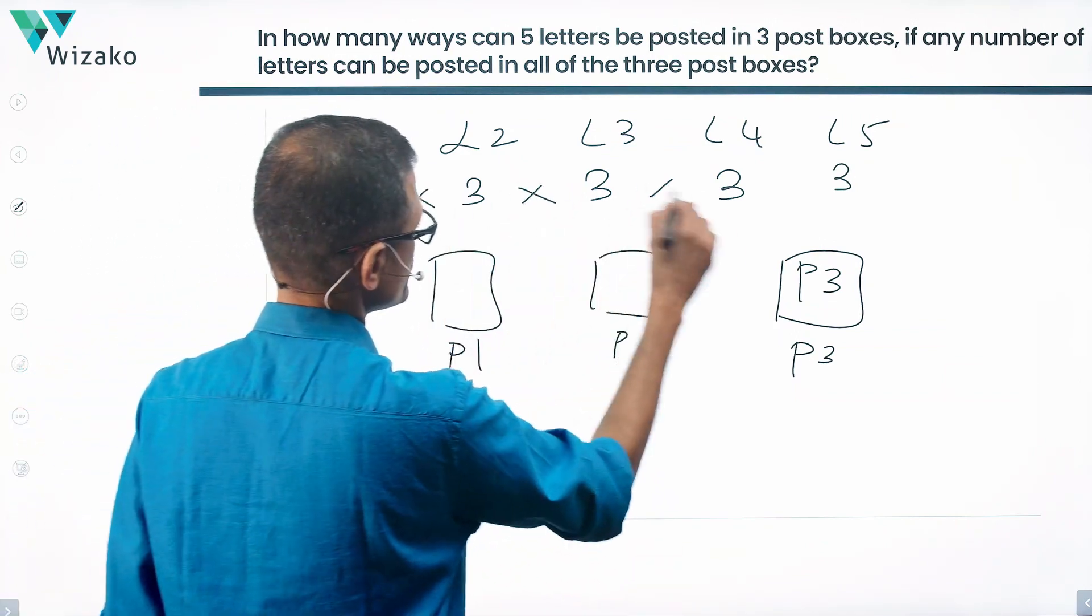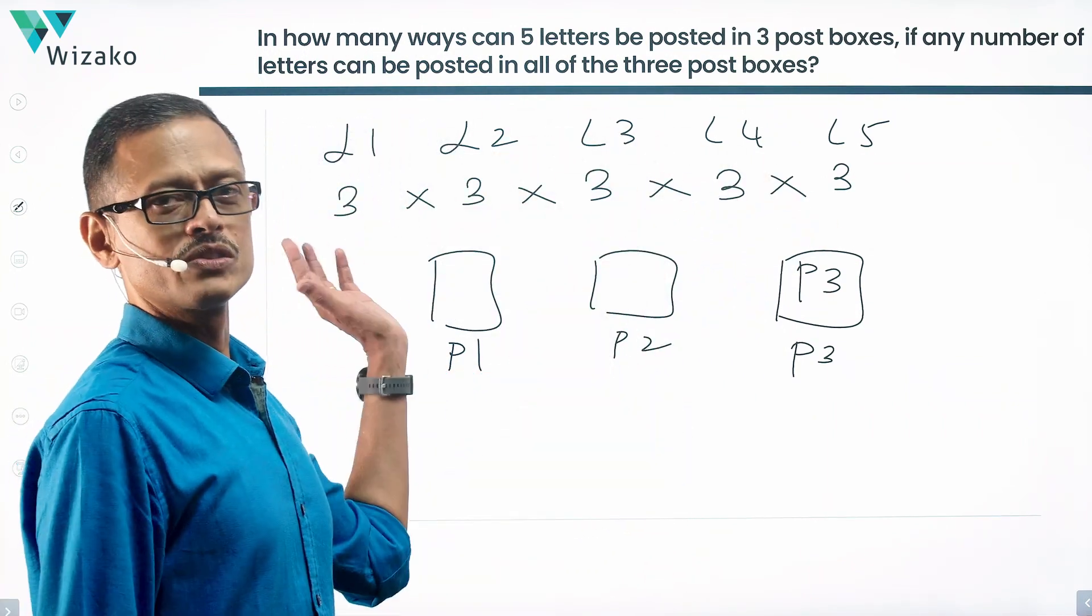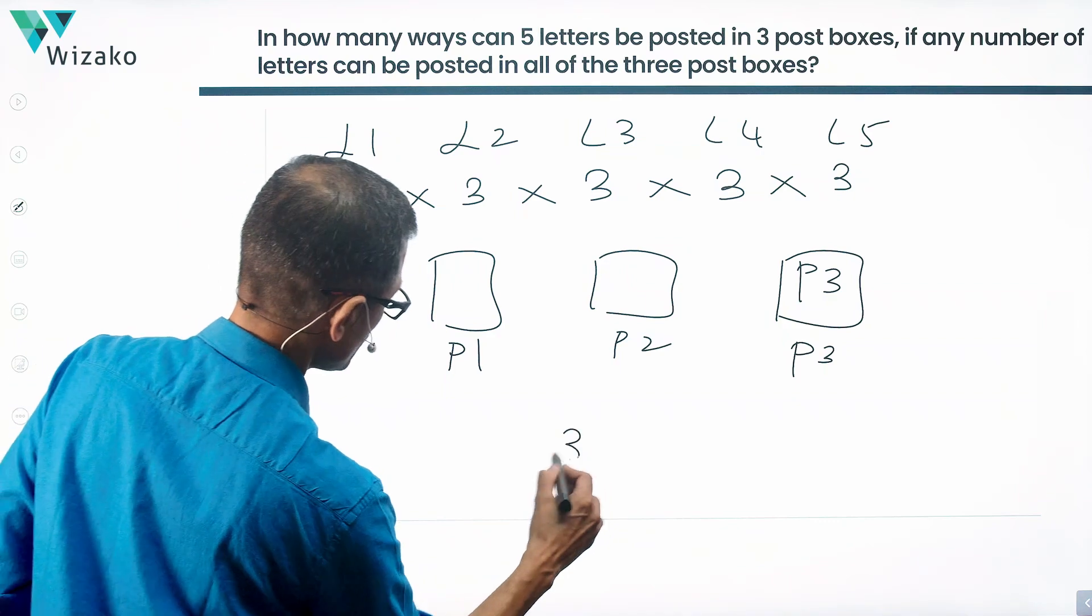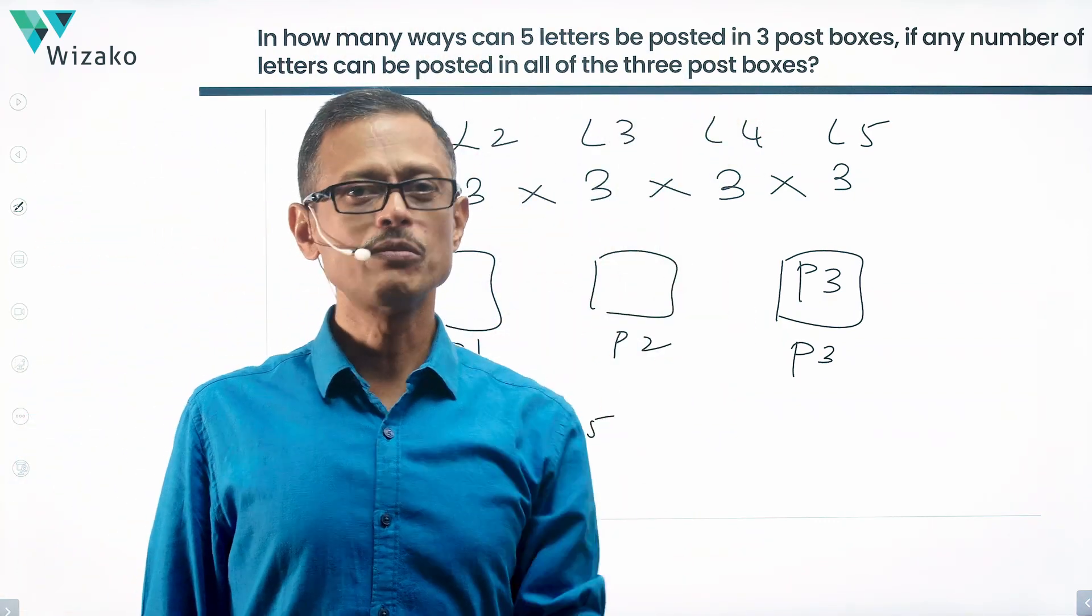Because it's an and, we basically use the, if the conjunction is and, use the operation multiplication. So three raised to the power of five is the total number of ways in which these five letters can be posted into three boxes.